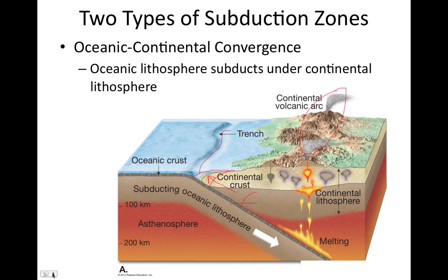In oceanic-continental convergence in particular, we have the formation of a coastal mountain range. This coastal mountain range is formed by the deformation of the thick continental crust due to the collision of the two plates, and the volcanoes usually coincide with the coastal mountain range. The volcanism always occurs on the overriding plate — in this case, the continental plate.